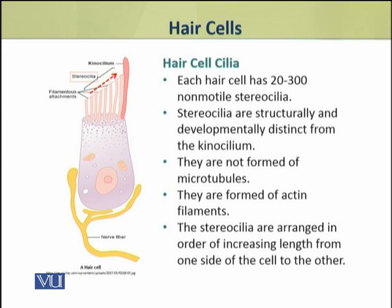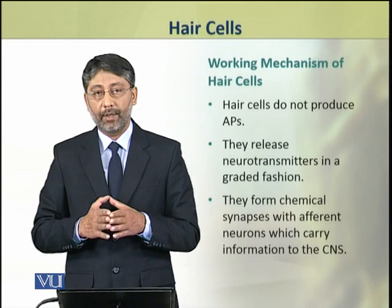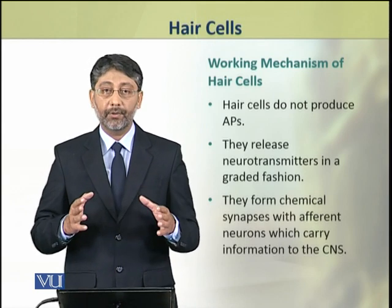Now we shall discuss the working mechanism of hair cells. The stimulus, which is mechanical and may be pressure or force, moves the bundles of stereocilia, which produce an electrical signal. When the stimulus acts in such a way that cilia bend towards the tallest cilium, the cell depolarizes. When they bend in the opposite direction, the cell hyperpolarizes.